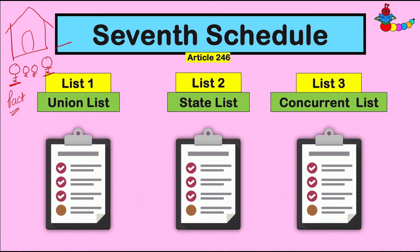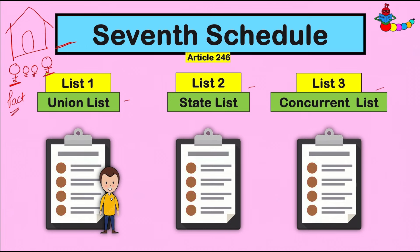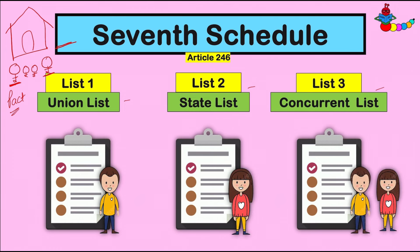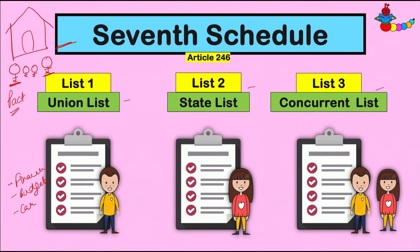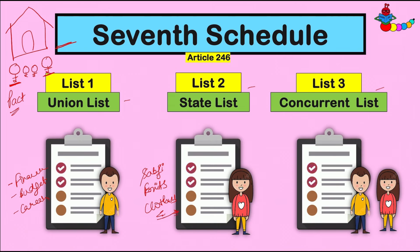ऐसे में दोनों के बीच में लड़ाई न हो मुद्दों को लेके, तो इन्होंने भी 7th Schedule की तरह तीन अलग-अलग lists बना लीं। List 1 में ऐसे subjects रखे गए जिनमें decision making power रहेगी पापा के पास। वहीं List 2 में ऐसी चीज़ें लिखी गईं जिनमें decision making रहेगी मम्मी के पास। List 3 में ऐसी चीज़ें रखी गईं जिनमें ये दोनों मिलकर decision making करेंगे। List 1 के subject matters थे finance, घर का budget, या career related कोई बात। List 2 में सब्जी कौन सी आएगी, fruits कौन से आएंगे, clothes कौन से खरीदने हैं। और बच्चों की शादी से related कोई decision दोनों मिलकर लेंगे।